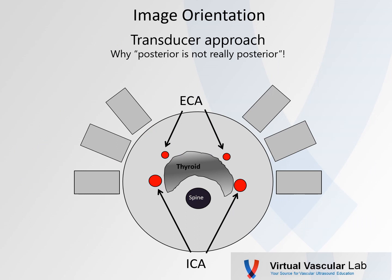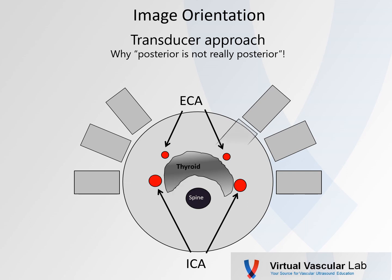One other aspect to consider in image orientation is really the transducer approach. When we're doing a carotid artery study, sometimes we can see things a little bit better from an anterior position, but oftentimes we scan through the sternocleidomastoid muscle from a more lateral position. This is why posterior is not really posterior — if we say posterior wall of the carotid artery, that's kind of relative. It might be posterior on that particular image, but we need to appreciate the plane and realize that it's not truly the posterior wall.